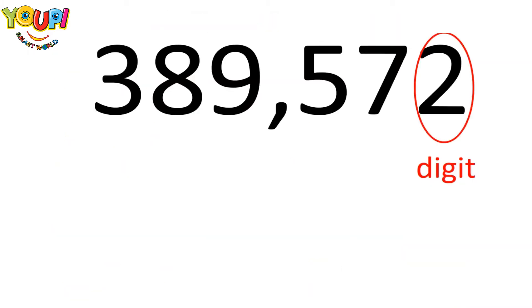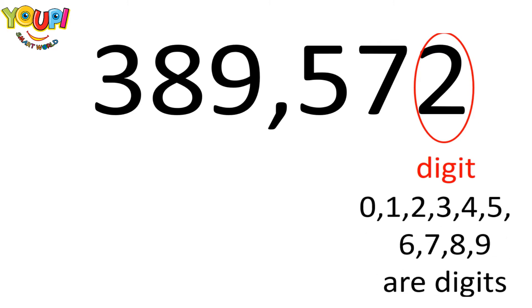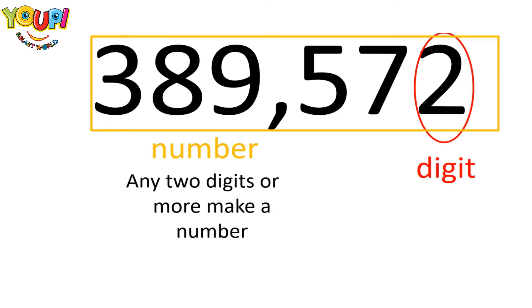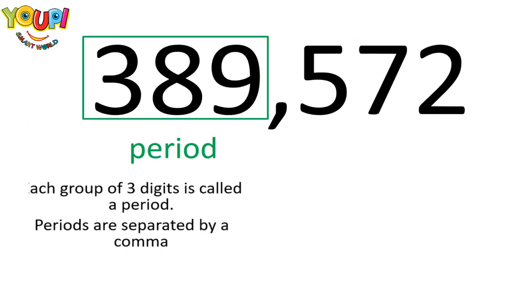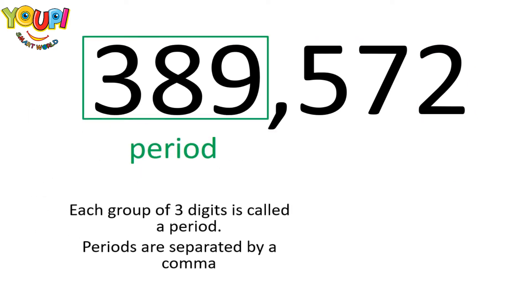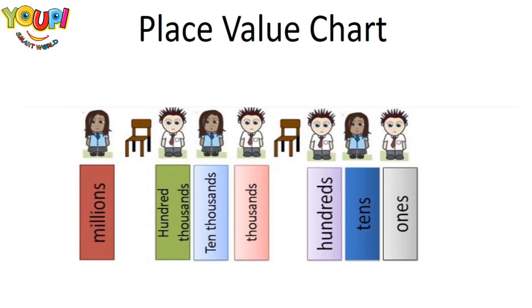Let's look at this number: 389,572. The digit 2 is one digit in this number. Note that any two digits or more make a number. It's also important to note that each group of three digits is called a period, and periods are separated by a comma.